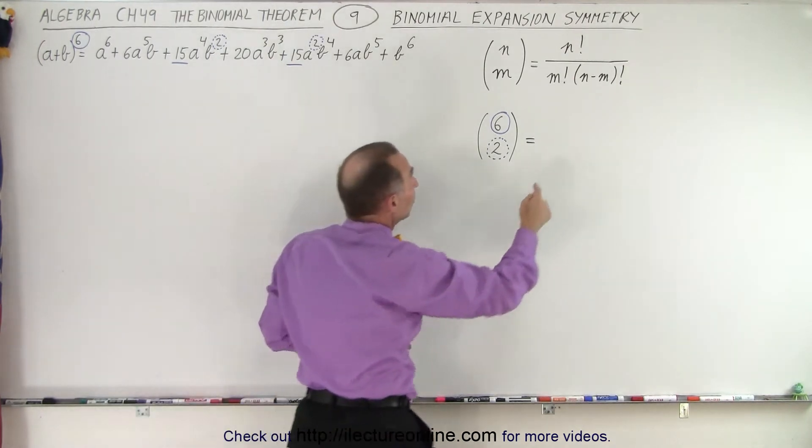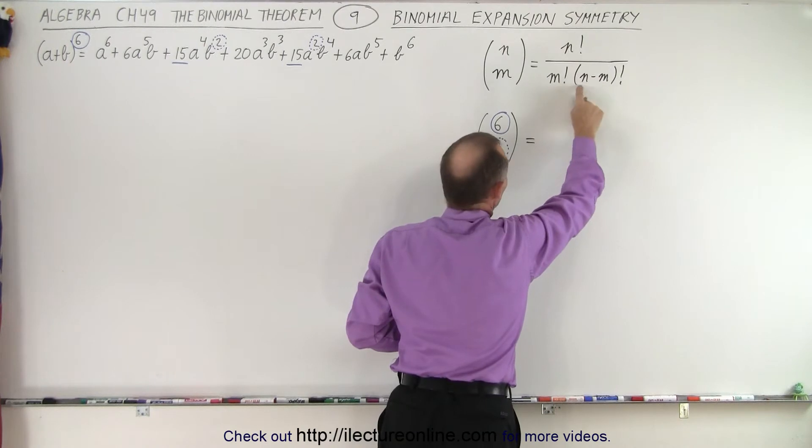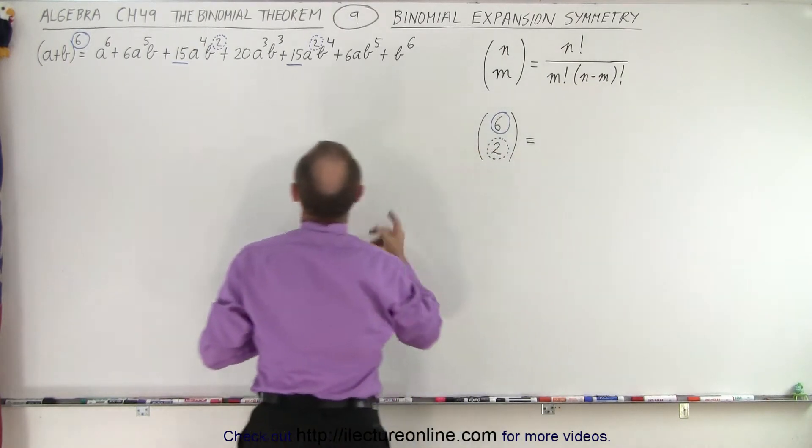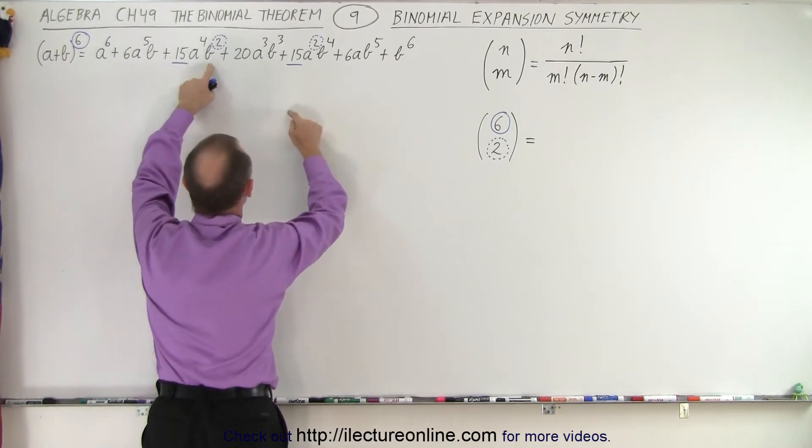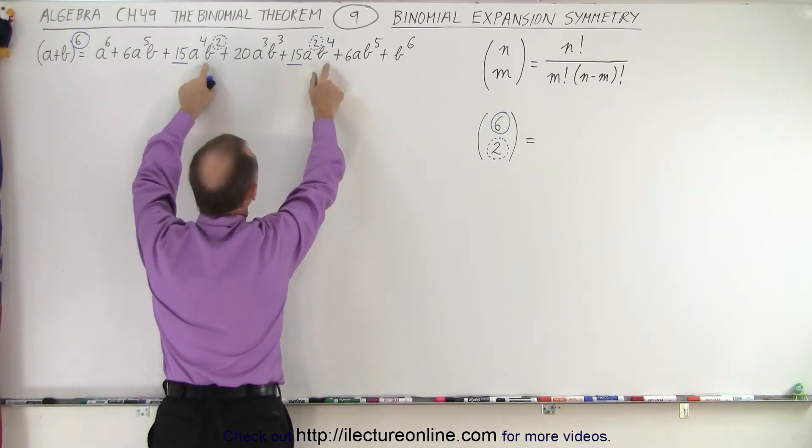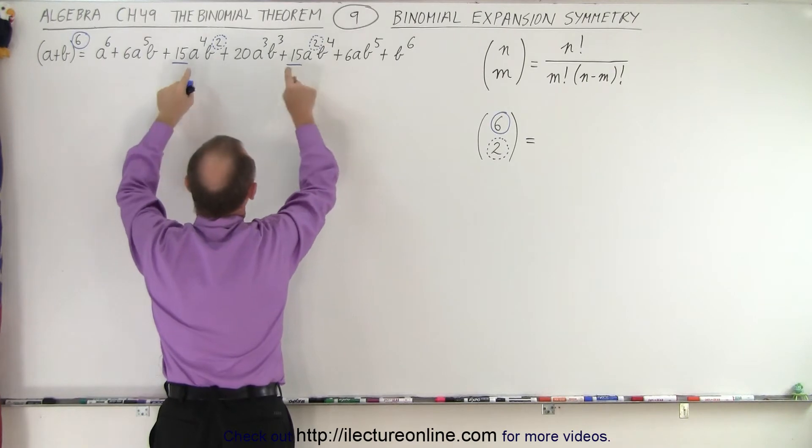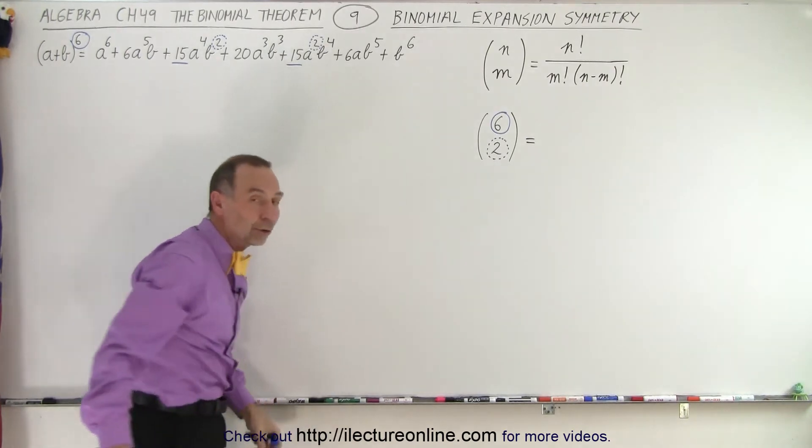And then when you take the difference, 6 minus 2, which is equal to 4, that would be the exponent of the other number. And again, notice you have A to the fourth B squared. A squared B to the fourth is just the two numbers reversed, and we get the exact same numerical coefficient.